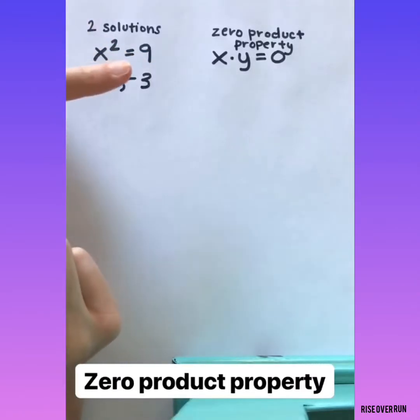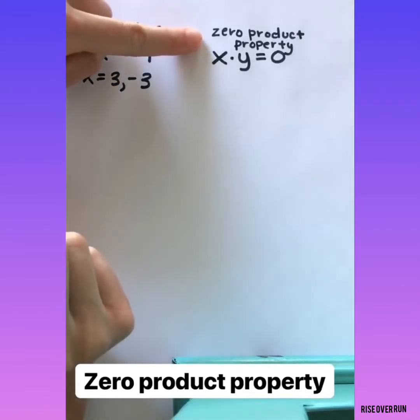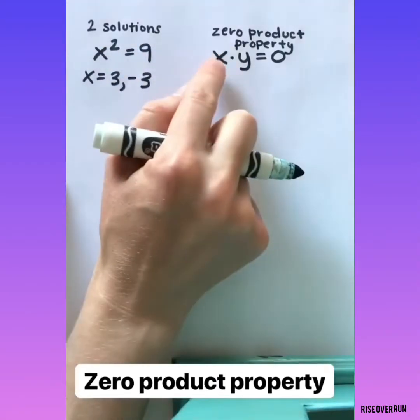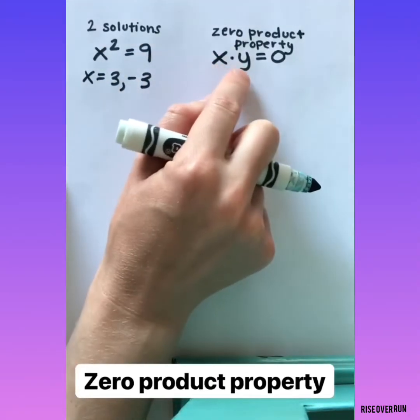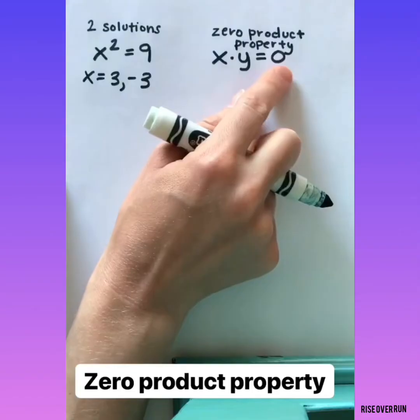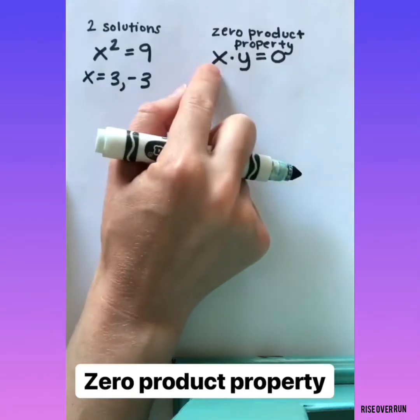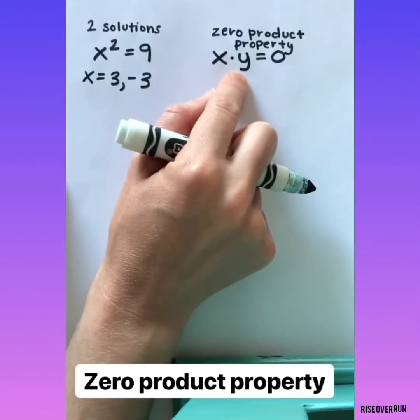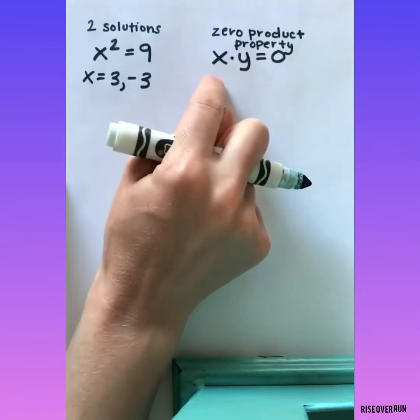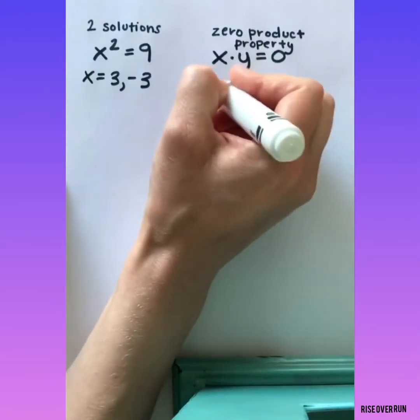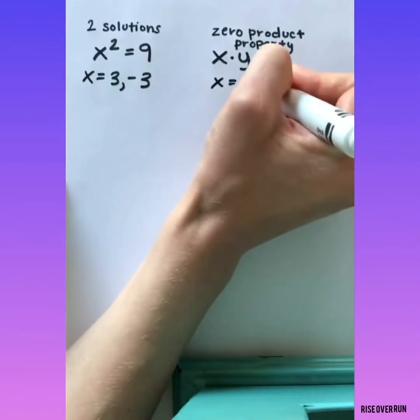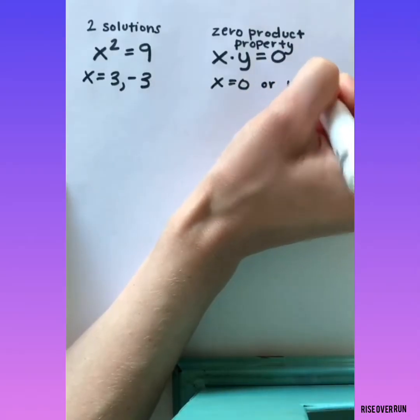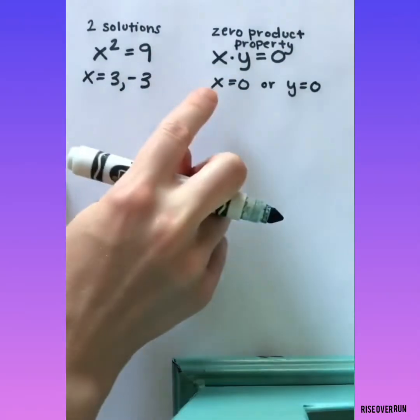Another thing to know when you're solving quadratics is the zero product property. If you have two factors being multiplied and they have a product of zero, then one of these has to be zero. That's the only way to get zero when you multiply. Either x is zero, or y is zero, or sometimes both.